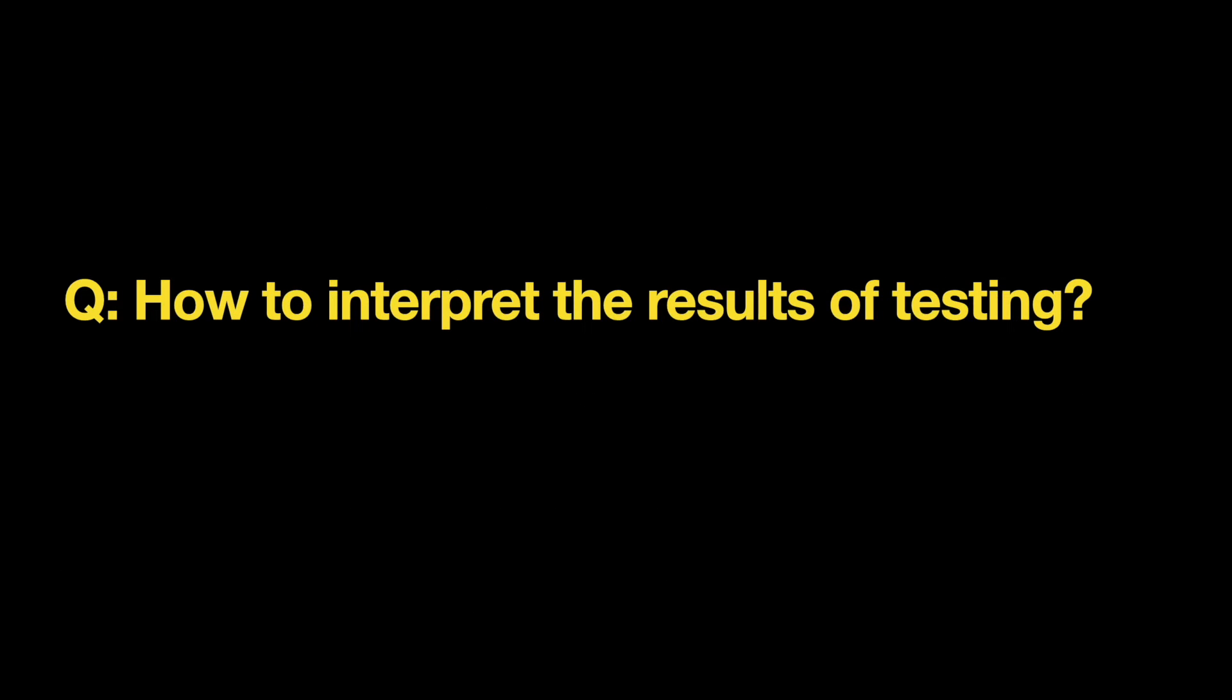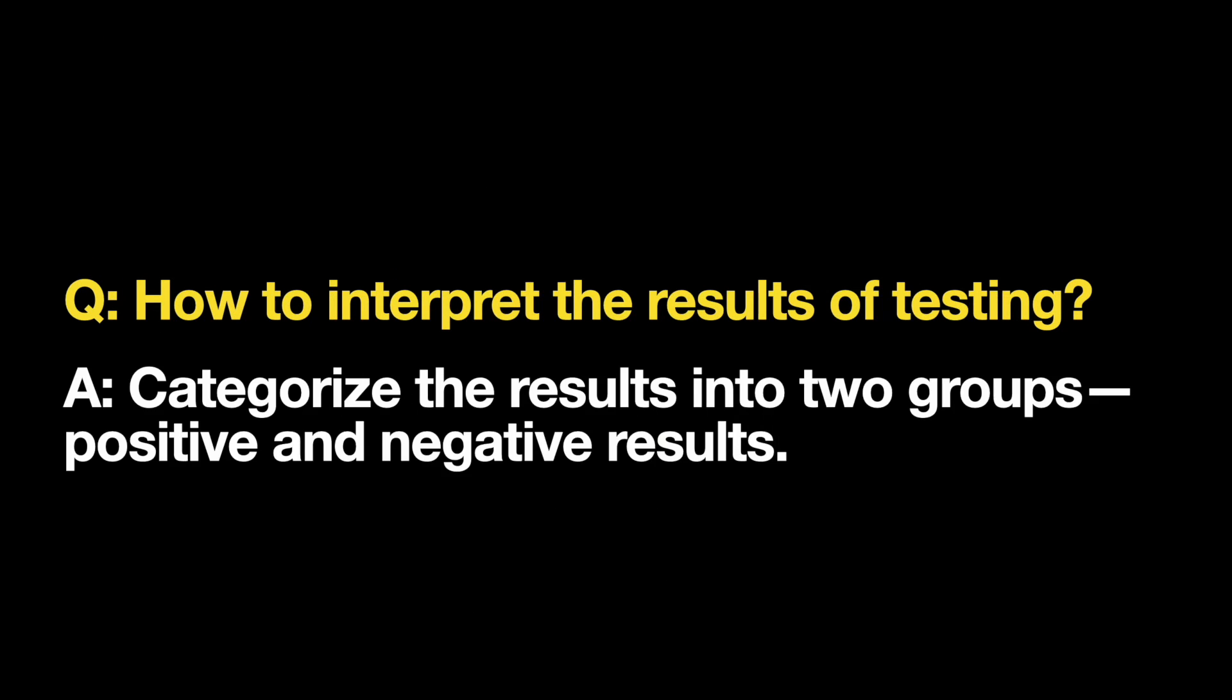How do you interpret the results? One of the best things about 5-second tests is that analyzing the results is straightforward. Generally, you can categorize results into two groups: the first group got the message you tried to communicate, and the second didn't. If the first group has, say, 90% of participants, your design is good. If the number is much lower, you need to introduce changes.